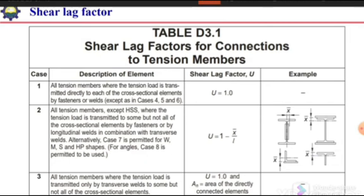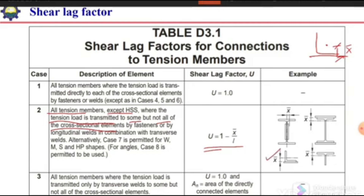If some parts are connected but not all — for example, all tension members except HSS, where the tension load is transmitted to some but not all cross-section elements — we need to calculate the U value using the formula. In the case of an angle with only one leg connected, we take the distance from the centroid to the load transfer plane and the length of connection to calculate U. For an angle section, it is simple to determine x-bar.